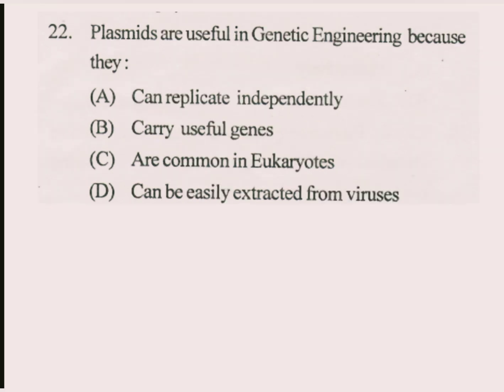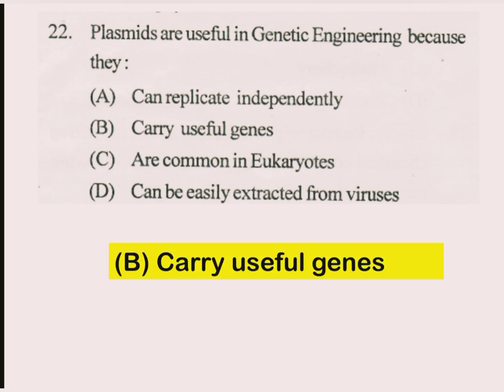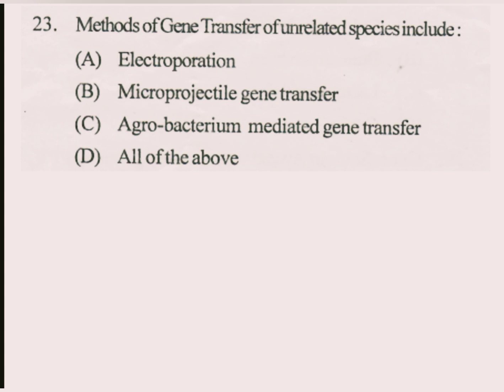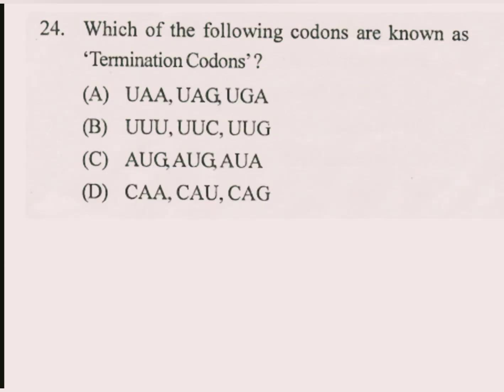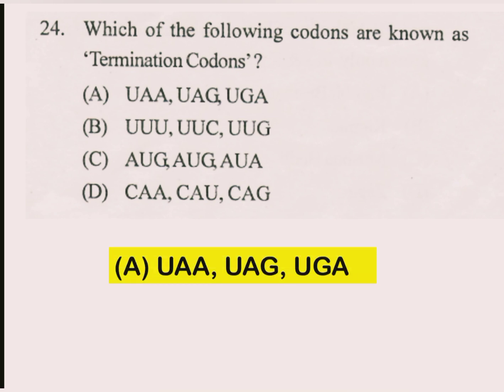Question number 22. Plasmids are useful in genetic engineering because they carry useful genes. Question number 23. Methods of gene transfer of unrelated species include? The answer is all of the above. Question number 24. Which of the following codons are known as termination codons? The answer is A part: UAA, UAG, UGA.